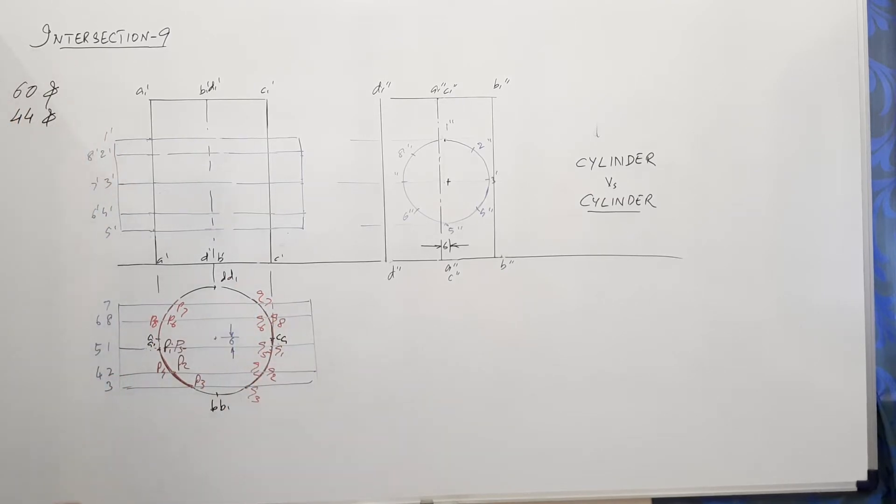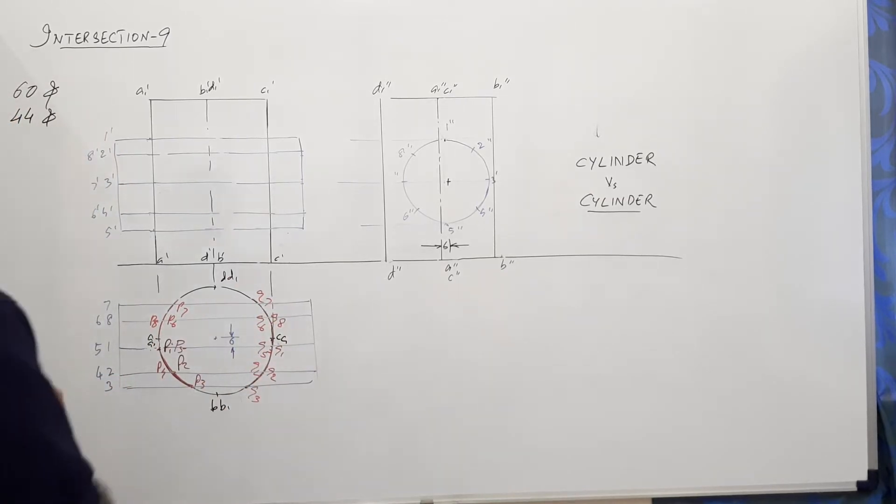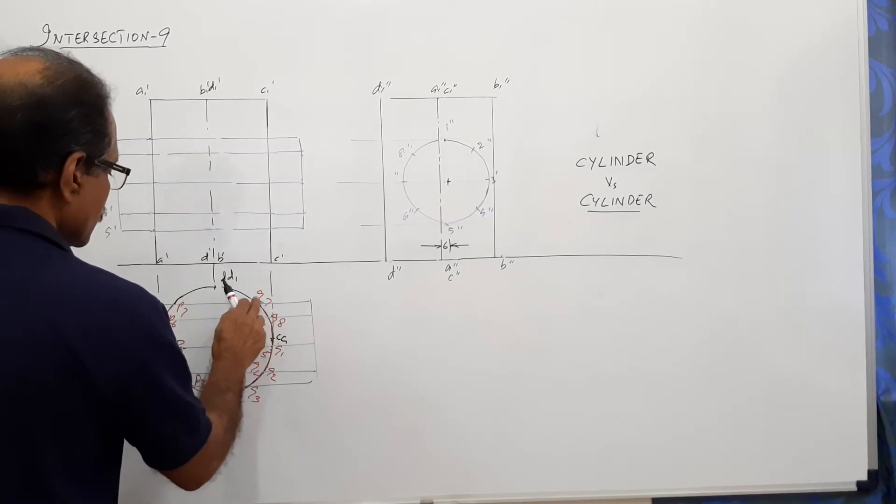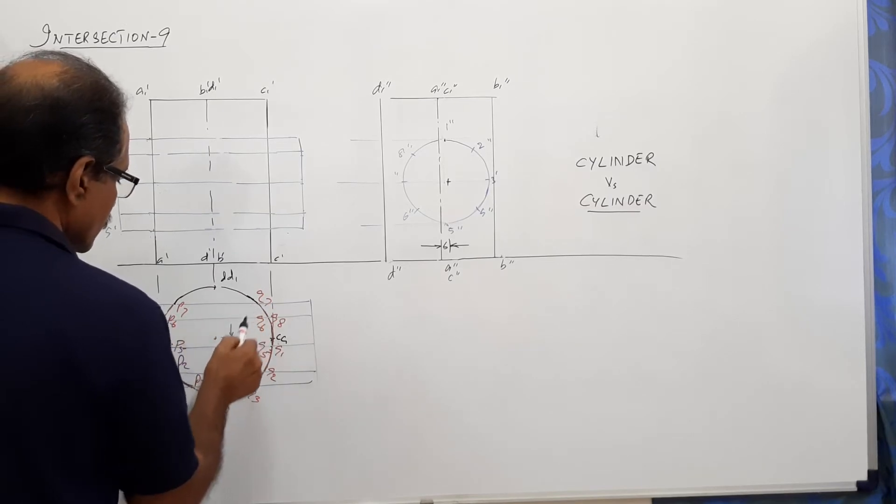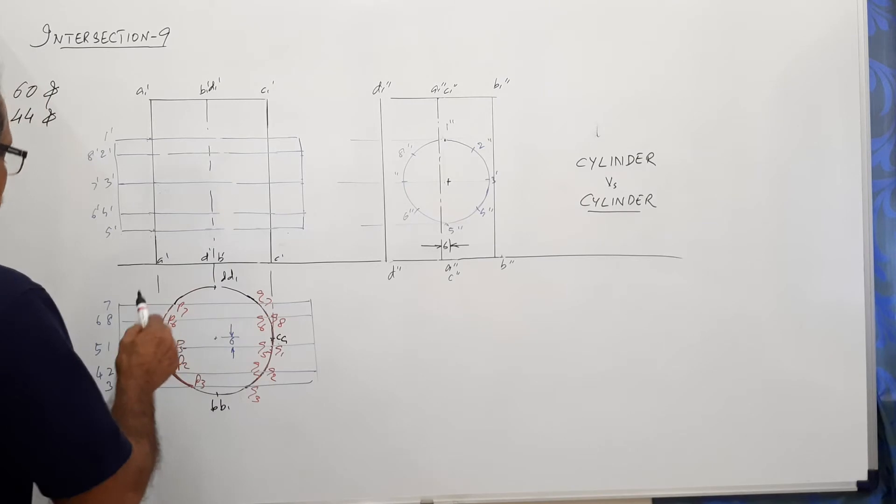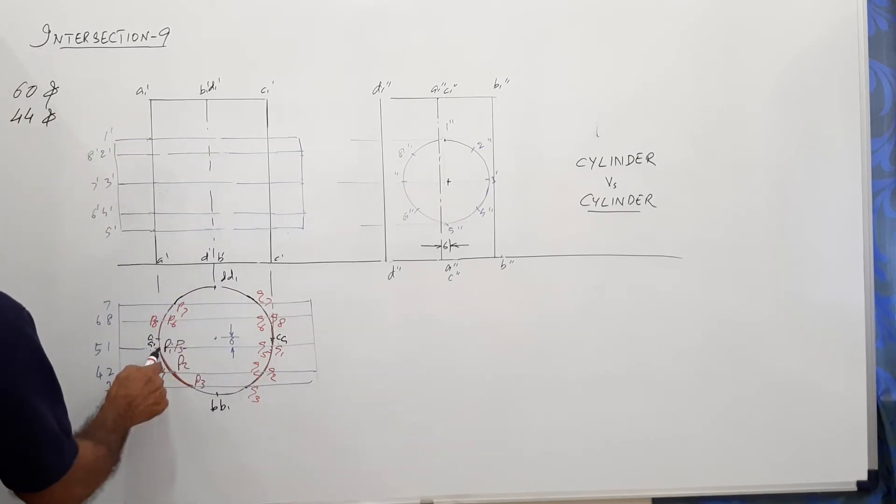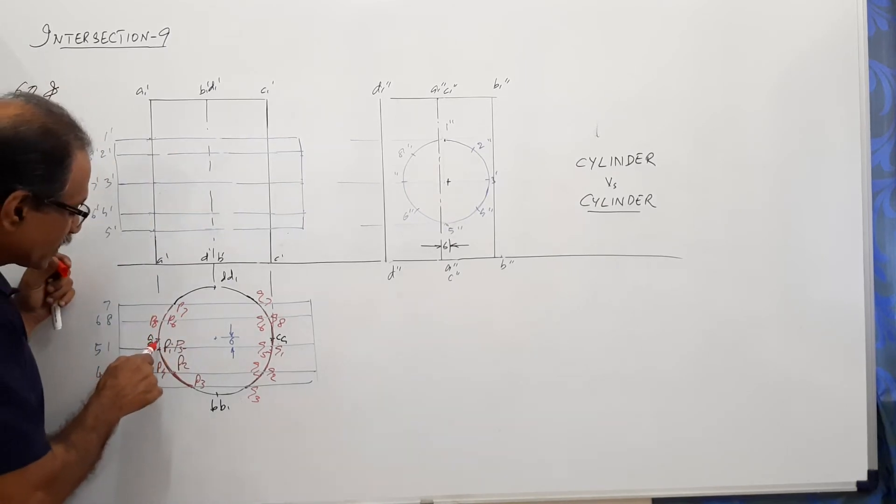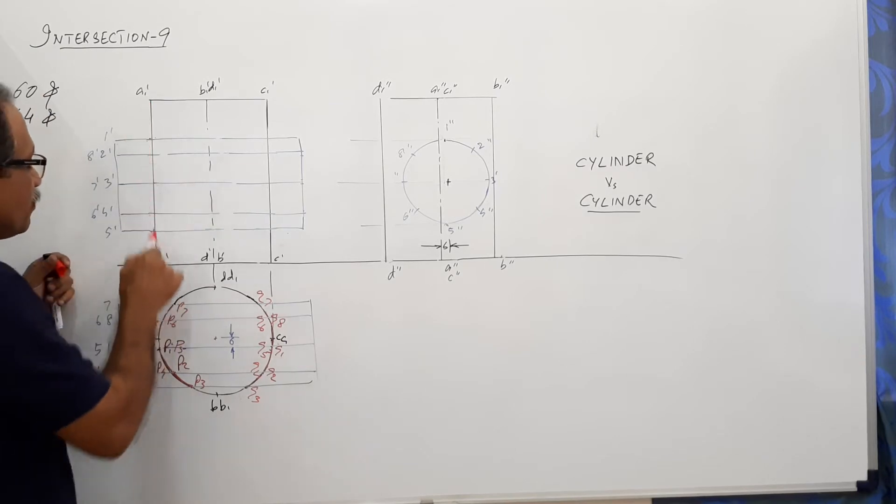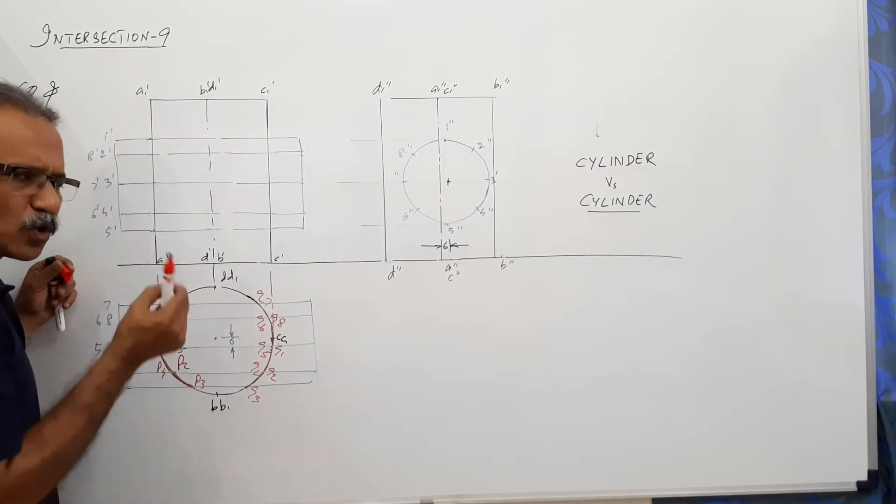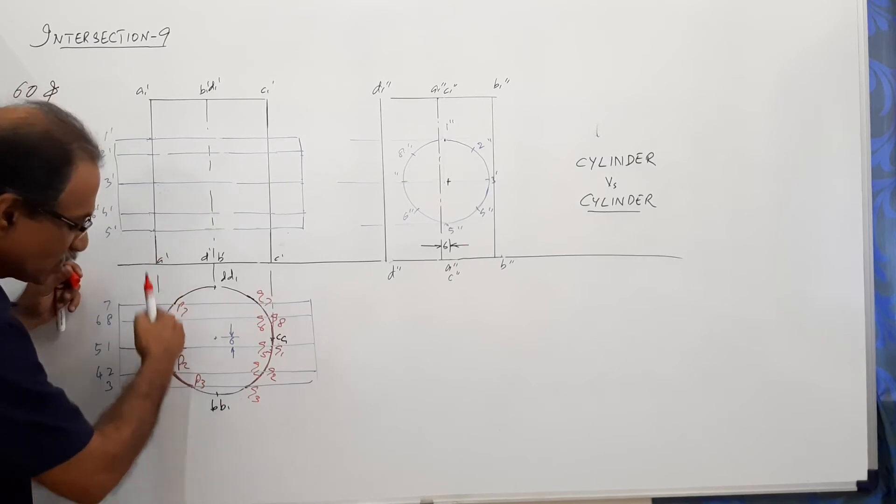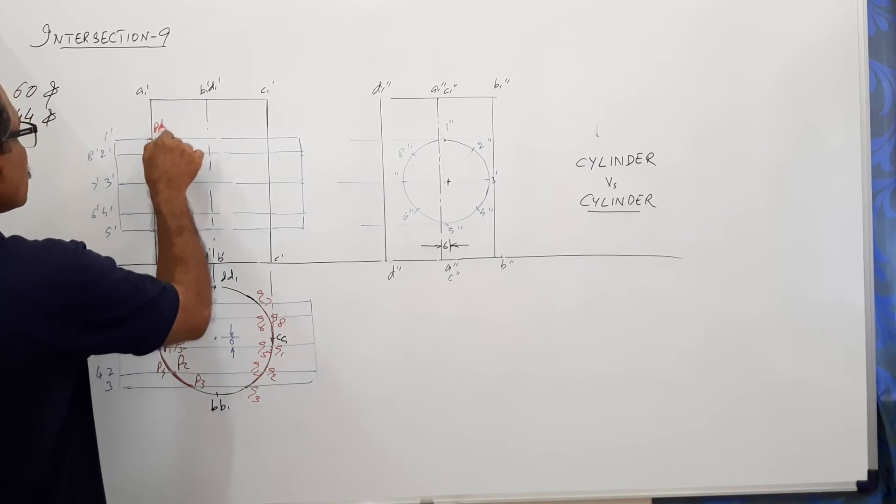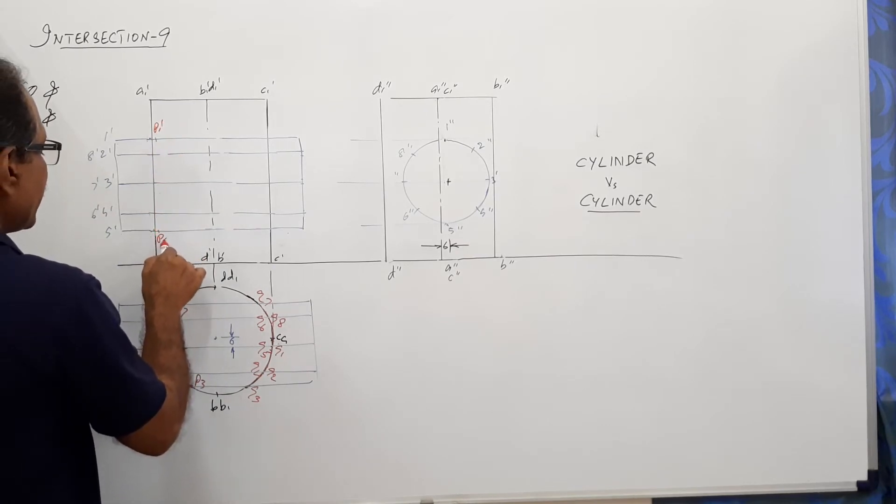Now, if you join them by smooth curve. So, when you project them to the elevation, the projector through P1 will not come to this point, but it will be a small distance to the right side. Because the projector through A will become A dash, A1 dash. This P1 is small distance to the below. It is downwards and a little bit to the right side. So that the projector through P1 will give you P1 dash small distance away and P5 dash small distance away.